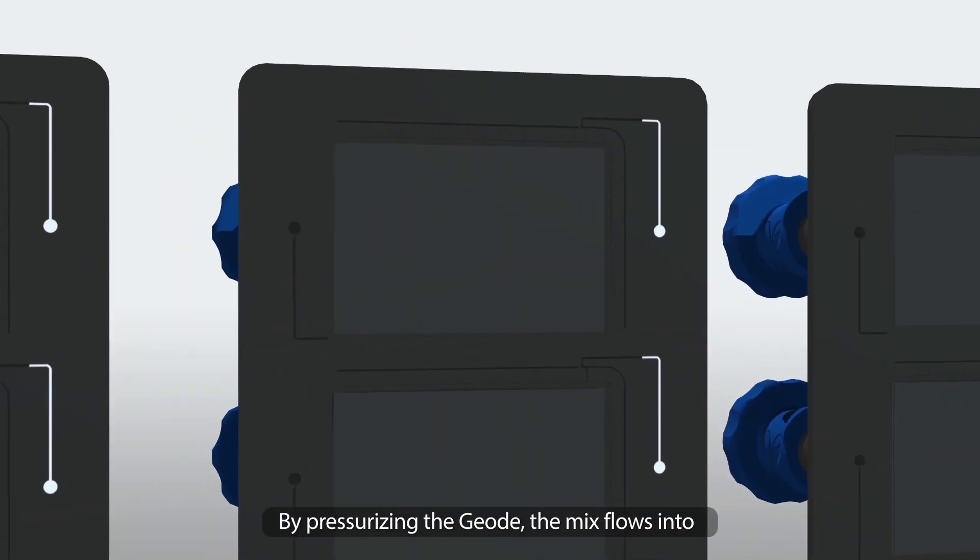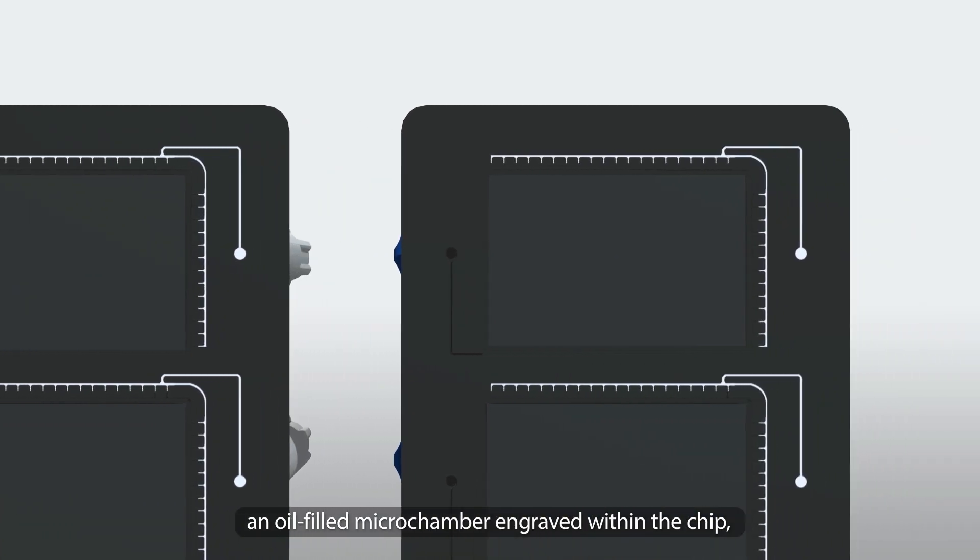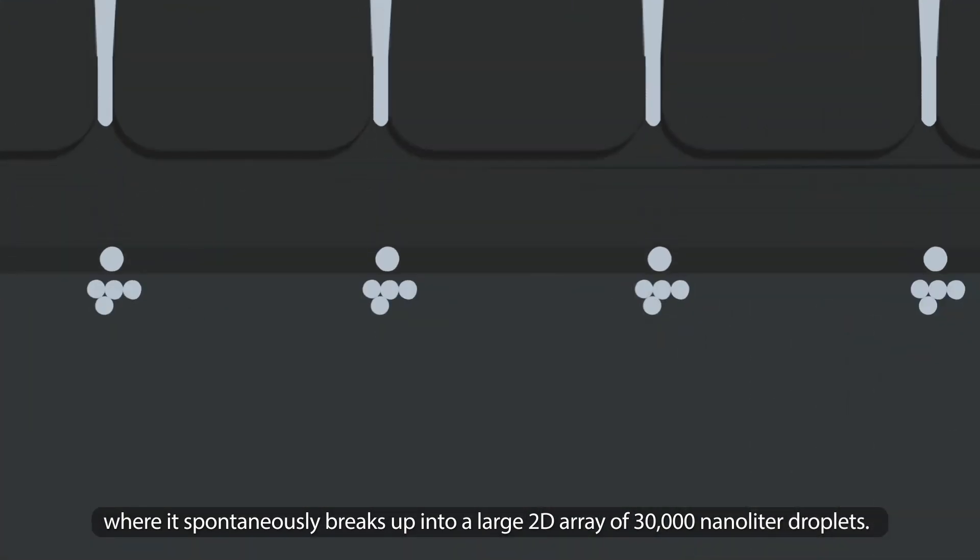Close the lid, click play and walk away. By pressurizing the geode, the mix flows into an oil-filled microchamber engraved within the chip, where it spontaneously breaks up into a large 2D array of 30,000 nL droplets.